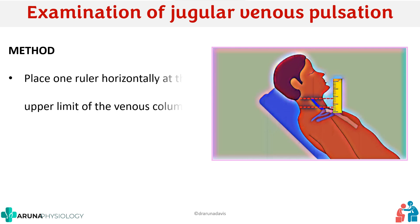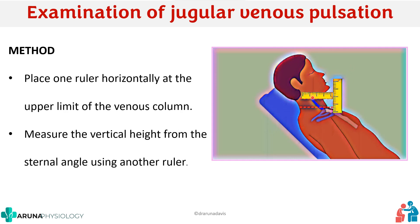To measure the JVP, place a ruler horizontally at the upper limit of the venous column. Then measure the vertical height from the sternal angle using another ruler. One ruler is placed horizontally parallel to the ground at the level of the jugular venous pulse, and another ruler is kept vertically at the sternal angle, perpendicular to the first. The height of the jugular venous pulsation is measured in centimeters.